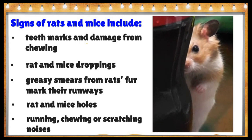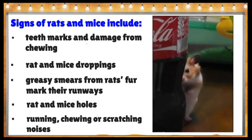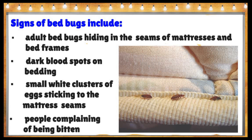Other signs of rats and mice are rat and mice holes, and running, chewing, or scratching noises. Signs of bed bugs include adult bed bugs hiding in the seams of mattresses and bed frames, dark blood spots on bedding, and small white clusters of eggs sticking to the mattress seams, as well as people complaining of being bitten.